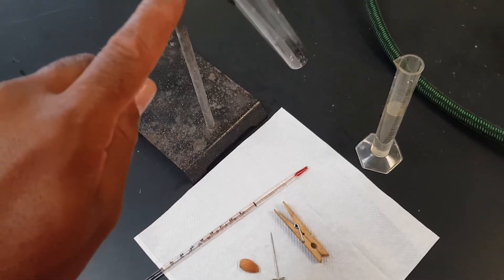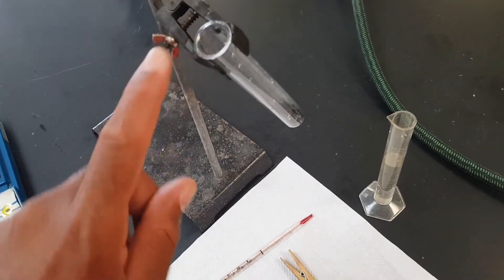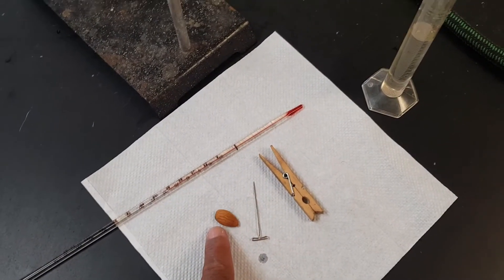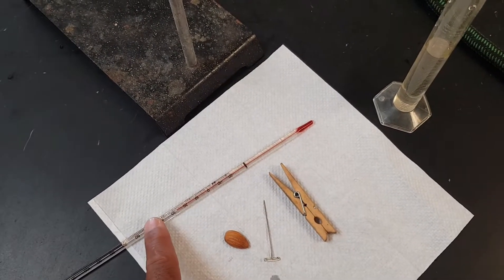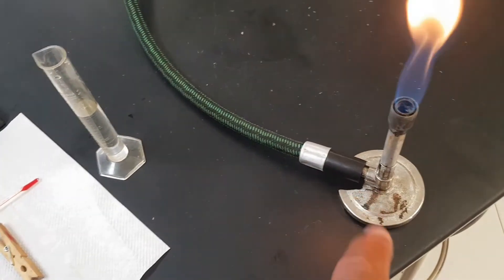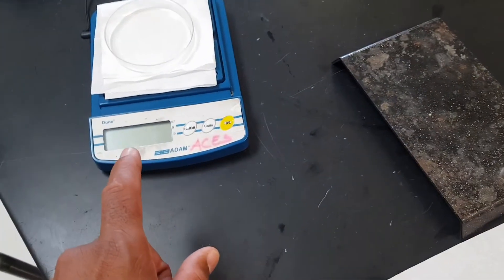So what do you need to use? We're going to use a test tube, T-pin, the nut, a thermometer, a clothespin, a bunsen burner, and a gram scale.